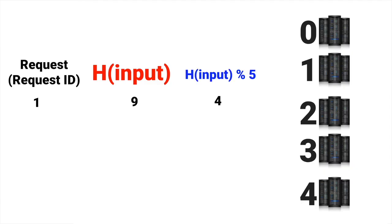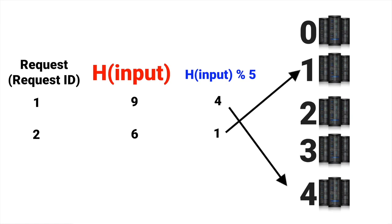So the request will be served from server 4. Similarly, for request ID 2, the hash function outputs 6, and 6 mod 5 gives 1, so the request will be served from server 1. Since the hash function is uniformly random, we can expect the load to be uniformly distributed — on average, equally spread across all servers.